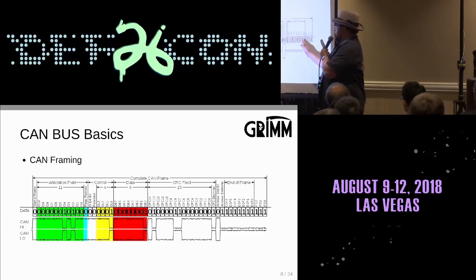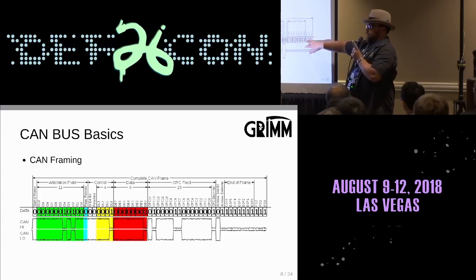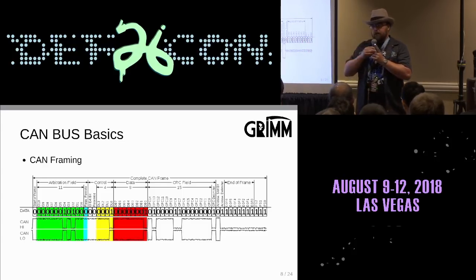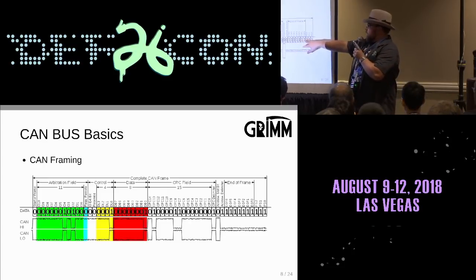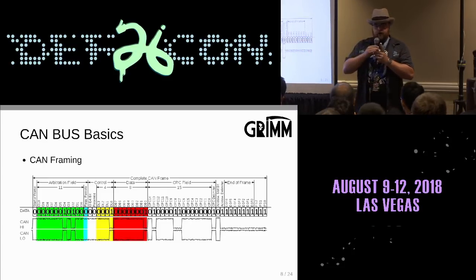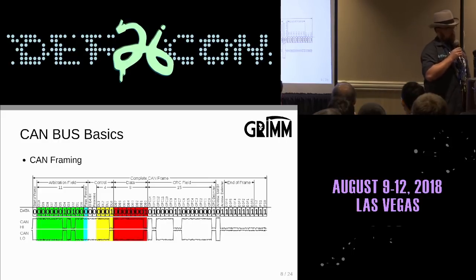After the acknowledgement, you have a seven-bit end of frame and at least three more recessive bits as inter-frame spacing. Then the bus stays idle until another node decides it wants to transmit.